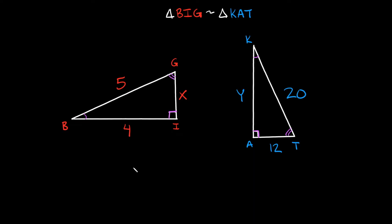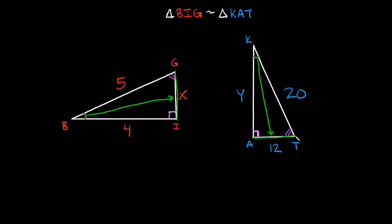To find which sides correspond to one another, base it off the angles. Angles B and K are corresponding, so draw a straight line from angle B — it hits side X (GI), and from angle K it hits side 12 (AT). So side GI corresponds to side AT. The 90-degree angle opens up to side BG, which is 5, and on the other triangle it opens up to side KT, which is 20. So BG corresponds to KT.